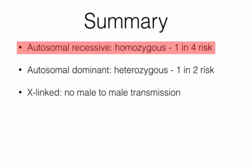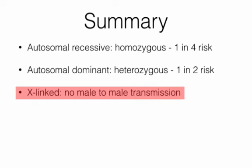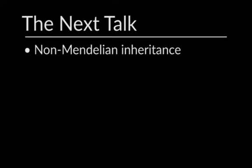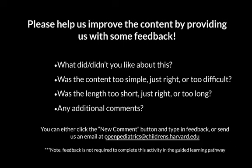In summary: an autosomal recessive trait will be manifest phenotypically in a homozygous individual — two carrier parents have a one-in-four risk of transmitting the mutation to any particular offspring. An autosomal dominant will be expressed in a heterozygous individual for the mutation, or possibly in a homozygous individual if this does not produce a phenotype so severe as to be lethal; a heterozygous individual faces a 50% chance of transmitting that mutation to any offspring. Finally, X-linkage will most typically be expressed in hemizygous males who have only one X chromosome, but there will be no male-to-male transmission. The next talk will consider exceptions to Mendelian inheritance and multifactorial inheritance.